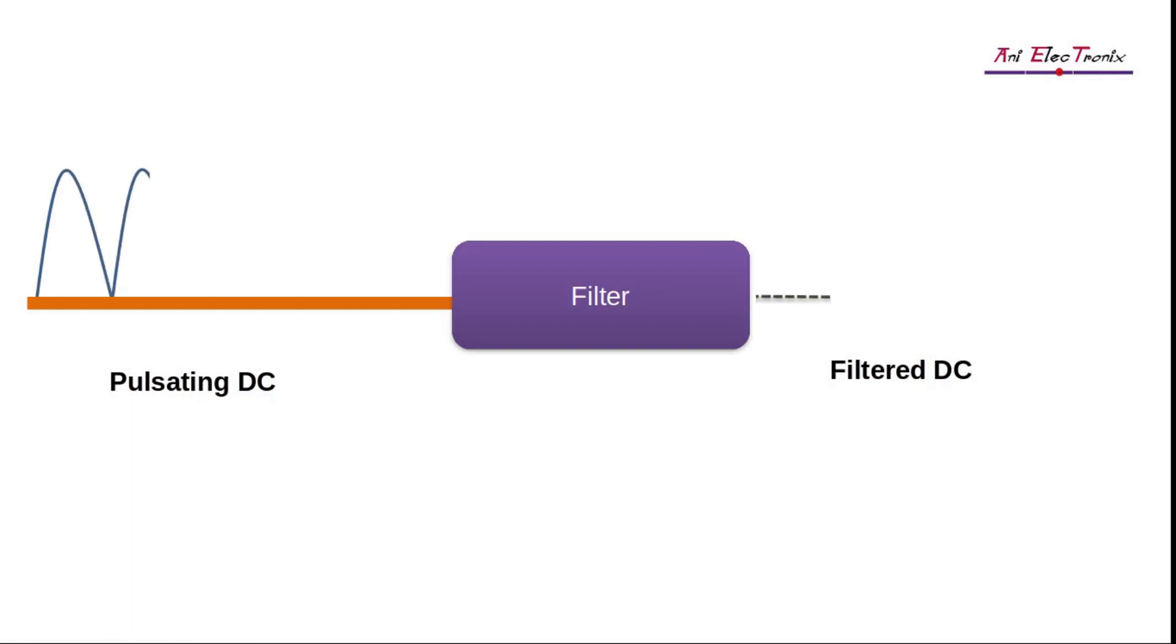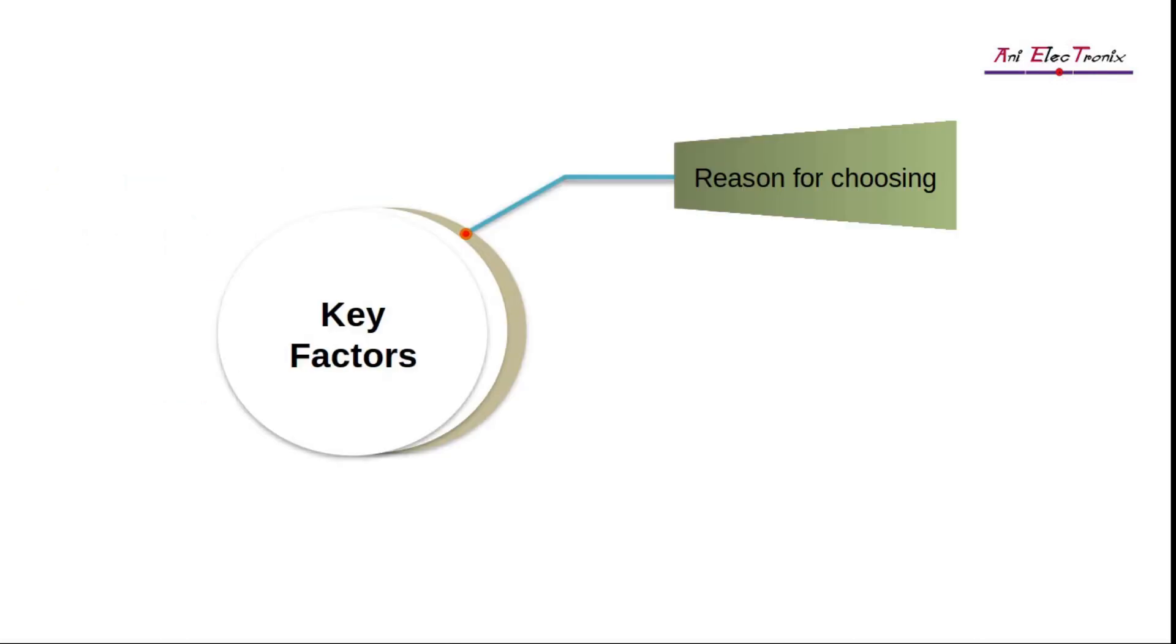Clearly, we require a filter that separates the AC part from the DC part at the output stage. First, let's take a look at the key factors used in creating a basic filter circuit, before going on to discuss the circuit and its components.